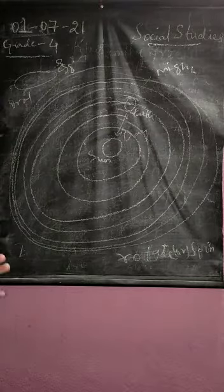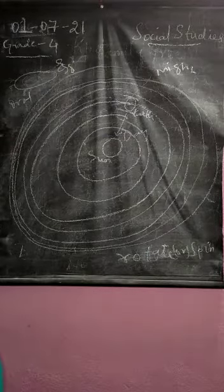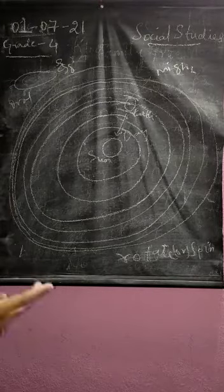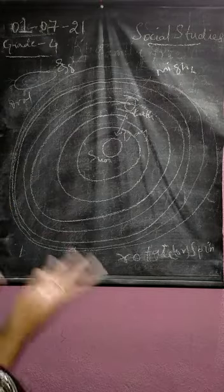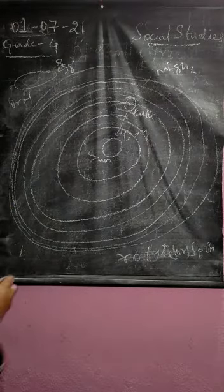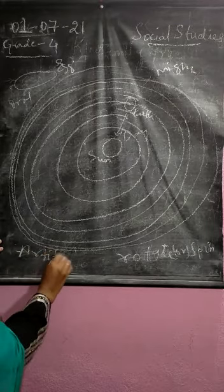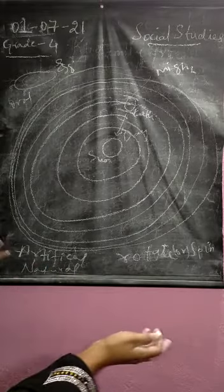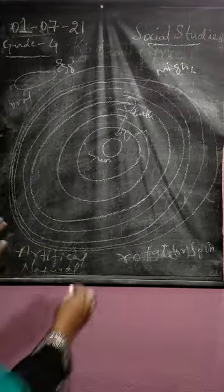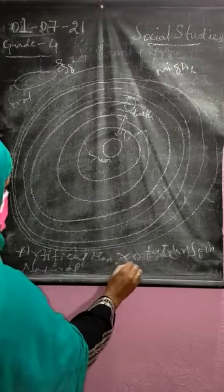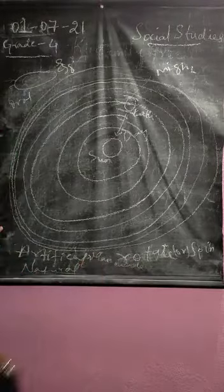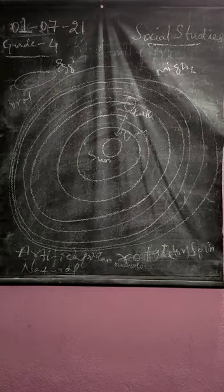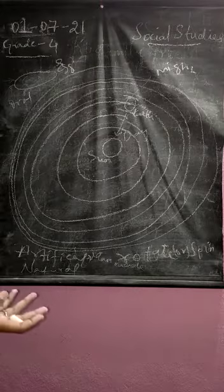And here, we didn't come across the satellite. So moon is called the satellite, only natural satellite of earth. Natural in the sense, it existed from the nature itself. Artificial is the man-made. Many satellites are man-made. Those are the artificial satellites which help in knowing the weather, the conditions, and all.